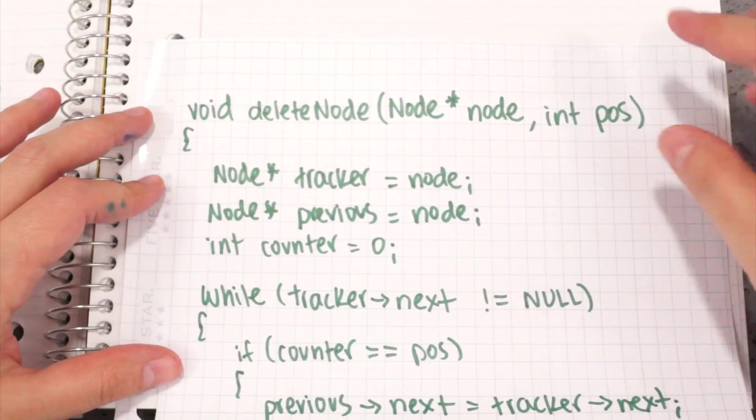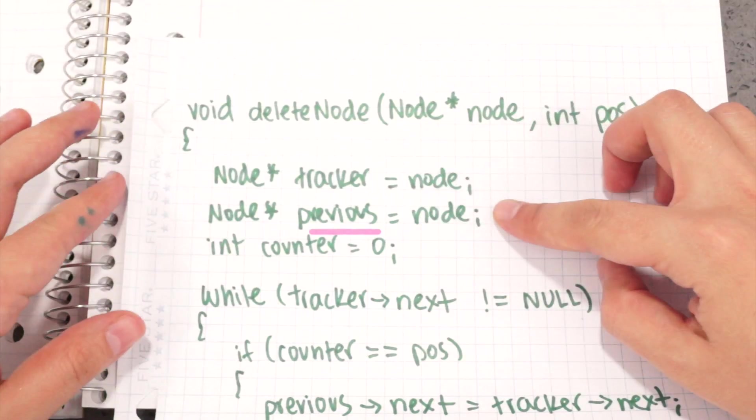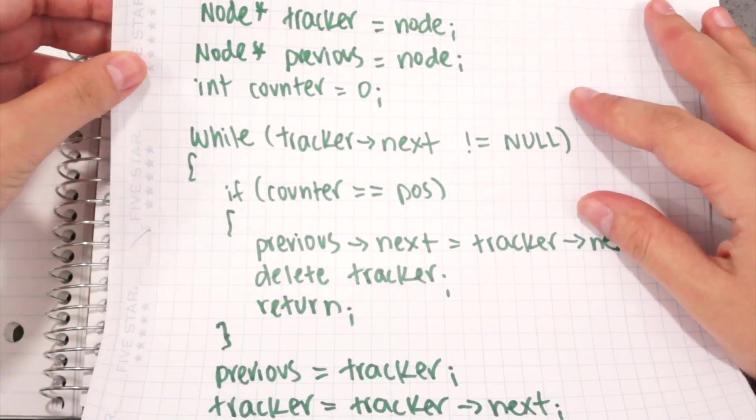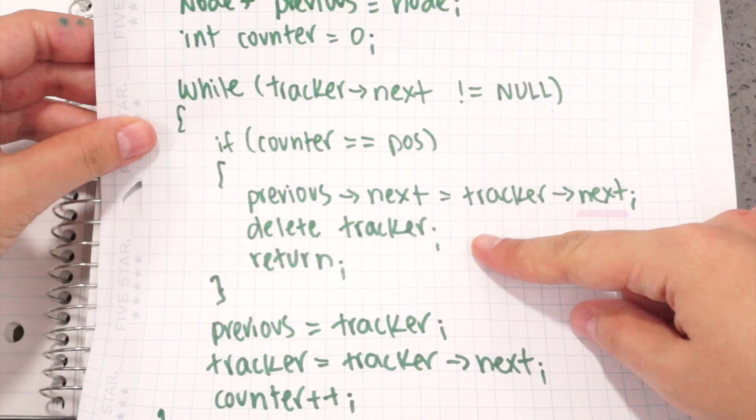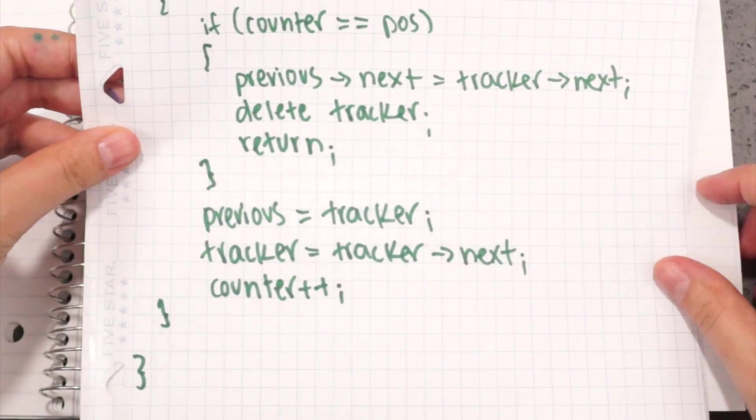Deleting nodes. In this function, I create a pointer to keep track of the current node, and a pointer to keep track of the current node's predecessor. I iterate through the list, and when I find the position of the node I want to delete, I set the previous node's successor to the successor of the node I am about to delete. Then I delete the node from memory.